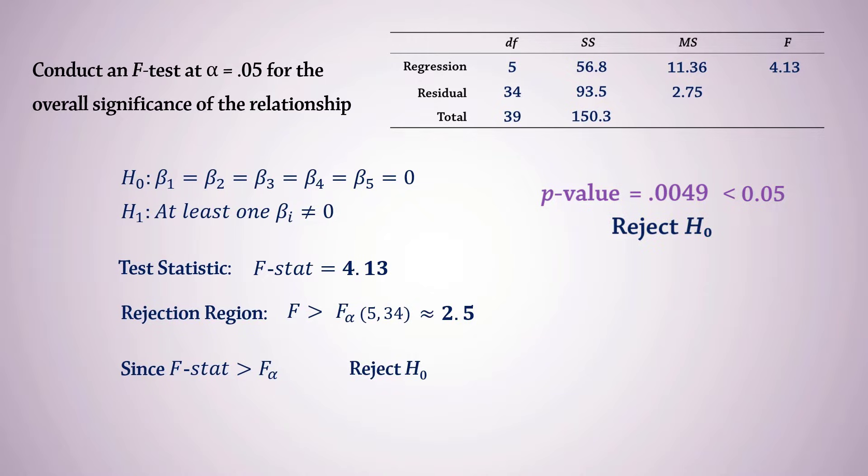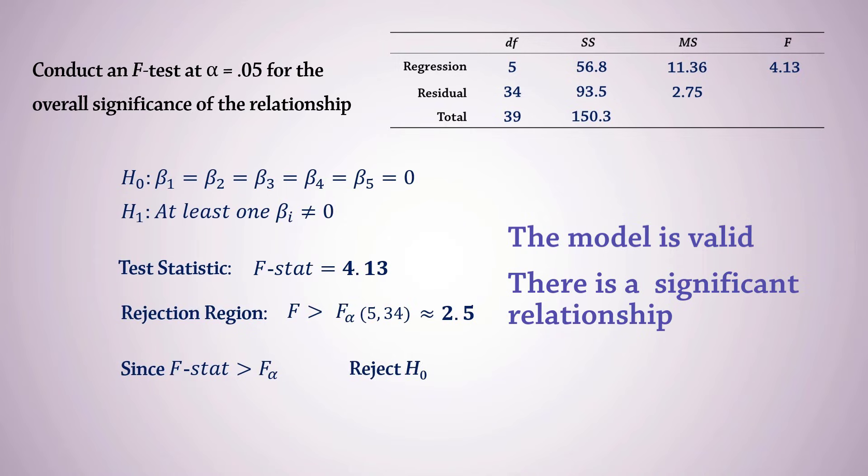In essence, both the critical value and the p-value methods should lead to the same decision. We can thus conclude that the overall model is significant or valid. That is, there is a significant relationship between the dependent variable and at least one of the independent variables.